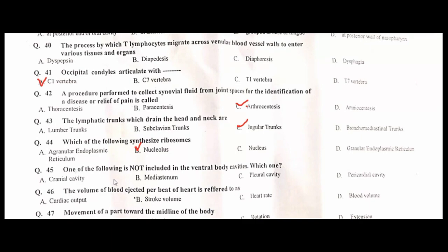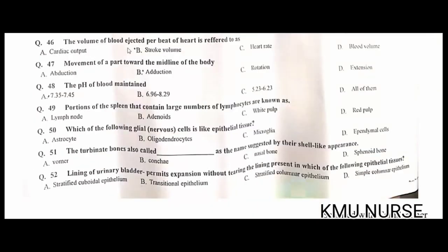Which of the following is not included in the ventral body cavity? Cranial cavity. A is the correct option. The volume of blood ejected per beat of the heart is referred to as stroke volume. B is the correct option. Movement of a part toward the midline of the body is adduction. B is the correct option.